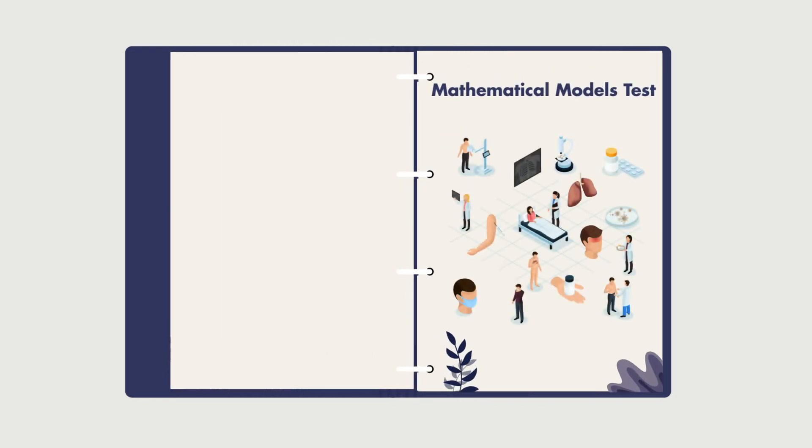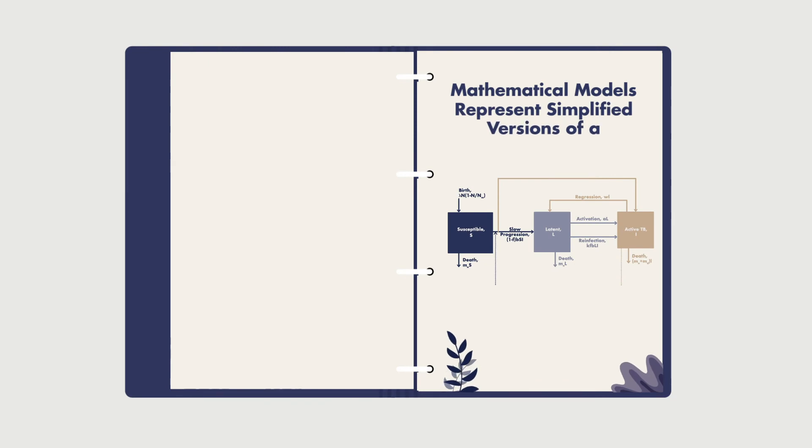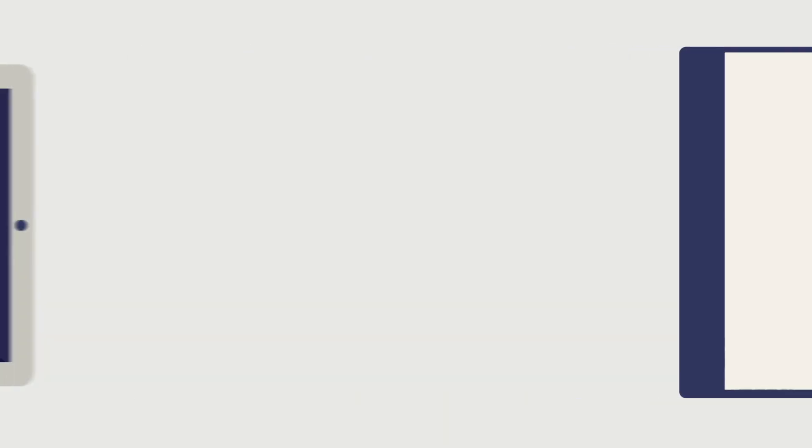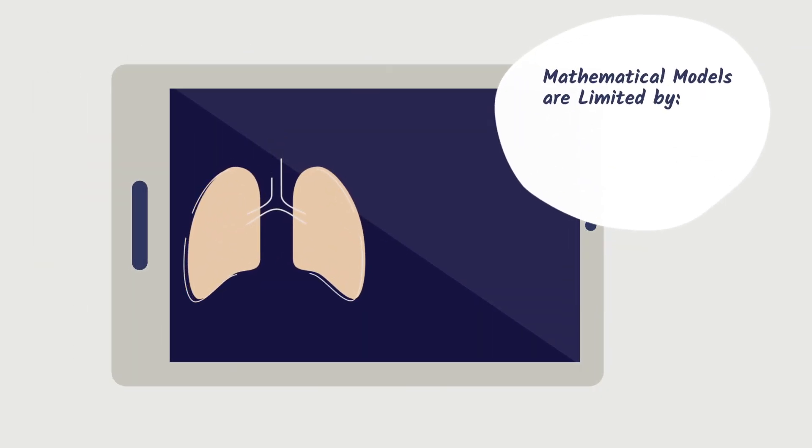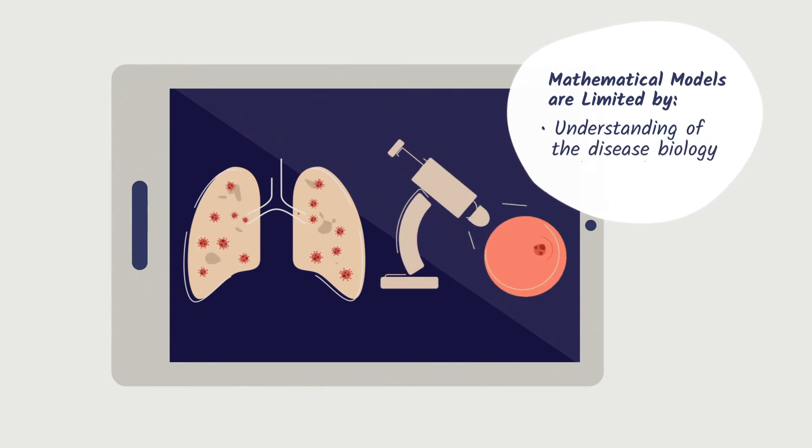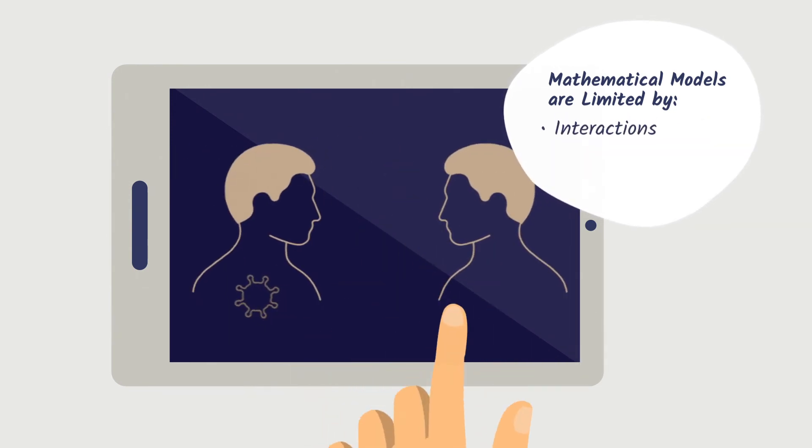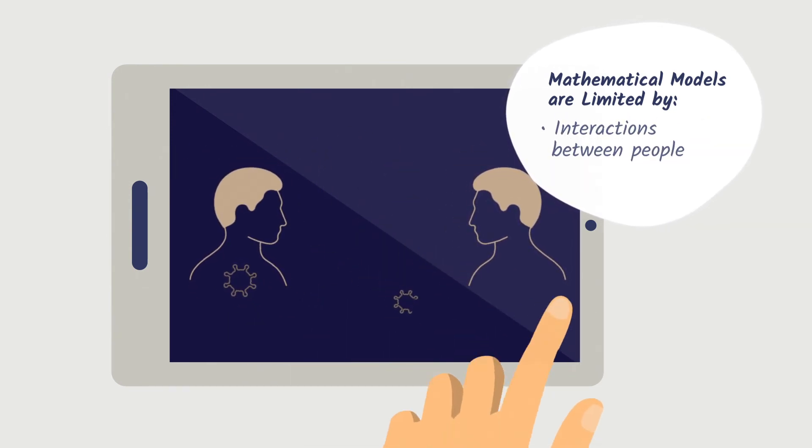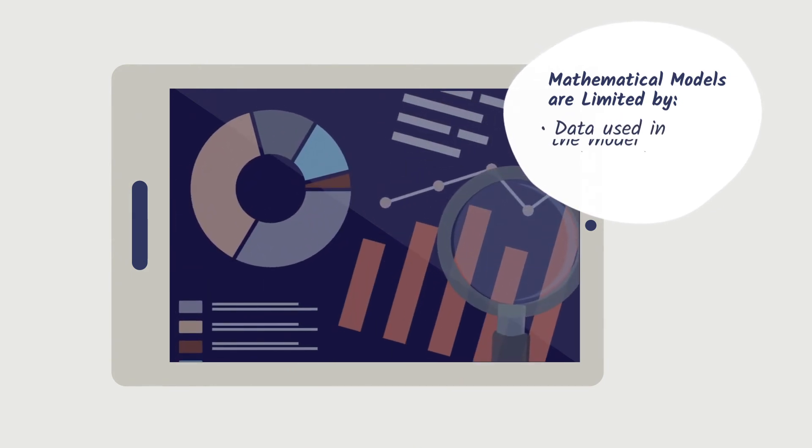Mathematical models are used to test what-if experiments and represent simplified versions of a complex system. They will always be limited by how well we understand the biology of the disease, interactions between people, and consequently the data used in the model.